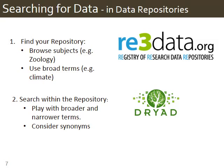For example, we know that Dryad has data about earwigs in it, and the Dryad repository is listed in Re3Data. But if you search in Re3Data for the word 'earwigs,' you would get zero results, because there isn't an entire data repository dedicated to earwigs, and the description of Dryad doesn't mention earwigs either. But if you go to Re3Data and browse under Zoology, you would find Dryad listed. So the tips for searching in directories are: browse the listings by subject area, or use broad terms like 'climate' or 'zoology.'